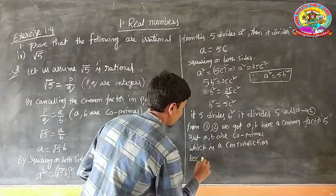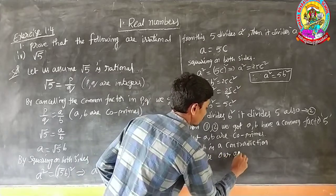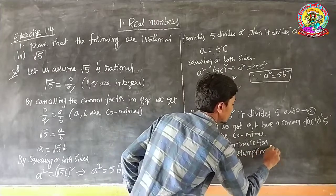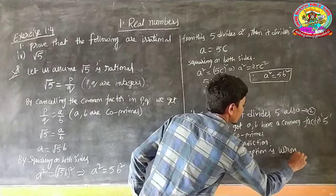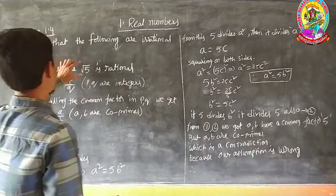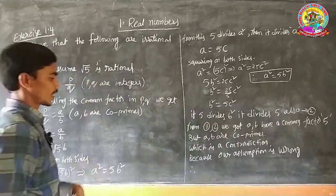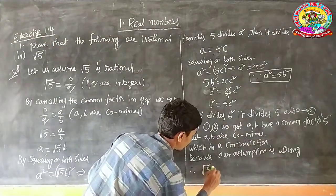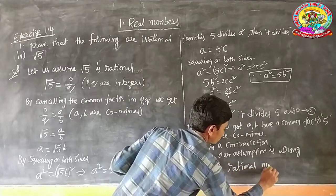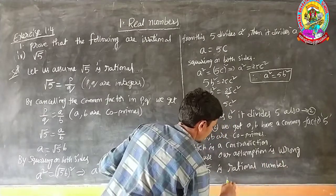This contradiction arose because our assumption is wrong. If our assumption is wrong, the given statement is correct. Therefore, root 5 is an irrational number. Hence it is the proof.